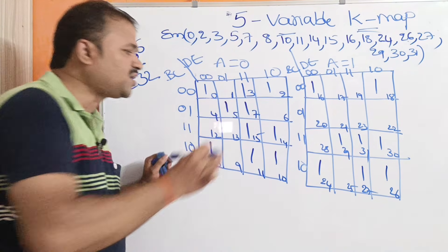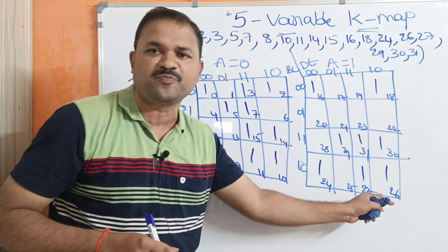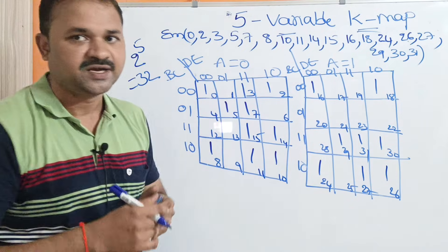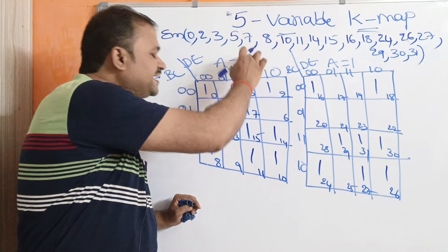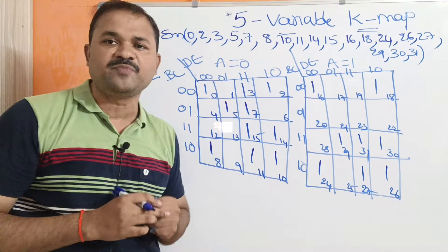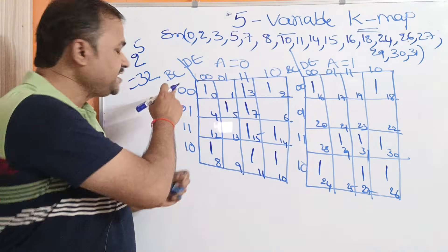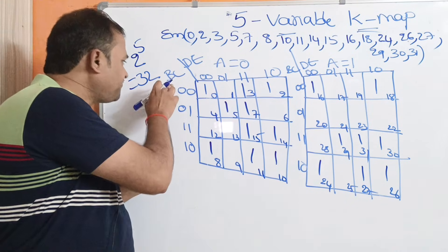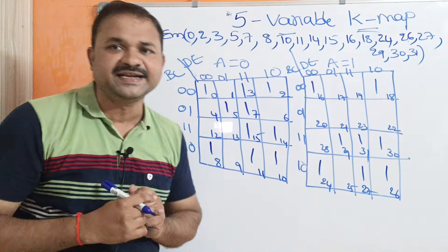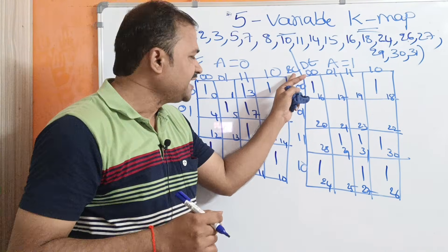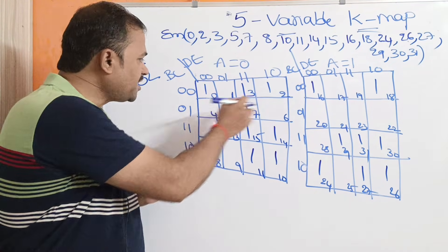This is the first 4-variable Karnaugh map which contains 16 cells, and this is the second 4-variable Karnaugh map which also contains 16 cells. Here we have 5 variables. If A is equal to 0, it represents the first Karnaugh map; when A is equal to 1, it represents the second Karnaugh map. The left-hand side represents BC and the right-hand side represents DE. So the 5 variables are A, B, C, D, E.